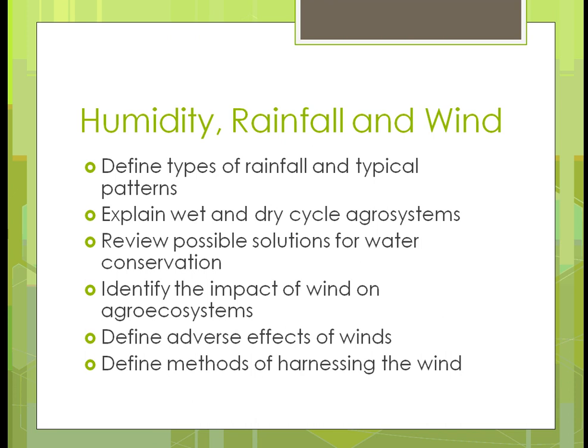Sometimes it's hard to discern what the pattern is, but a lot of that has to do with the area that you're in. We'll explain areas that have wet and dry cycle agri-systems, where they'll have an extended period of either wet or dry time, and how plants would adapt to that. Then we'll review solutions to problems in water conservation, because water is becoming a big issue — we're currently using it at a faster rate than it's replenishing. We'll also look at identifying the impact of wind on plants in an agri-ecosystem, the adverse effects, and how we can use wind to our advantage through windmills and turbines.